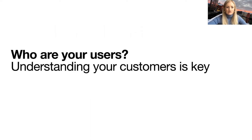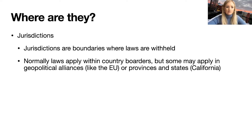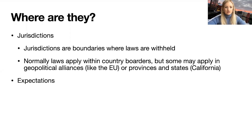When building these privacy experiences, it's really important to understand who your consumer is — this will be key for design decisions. First, where are they? Jurisdictions are boundaries where laws are upheld, normally within country borders, sometimes within geopolitical alliances like the EU, or smaller units like provinces and states such as California. Different people in different places have different expectations of how their privacy should be treated — a customer in Europe may have different expectations than one in China or the US.